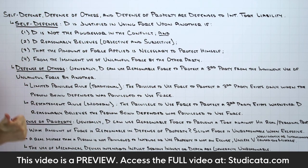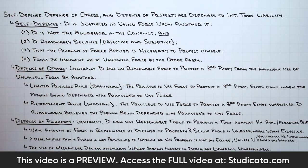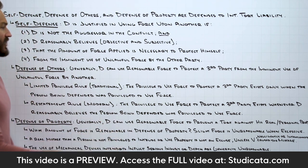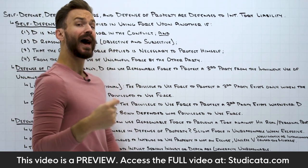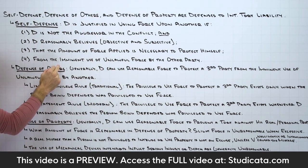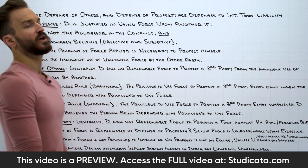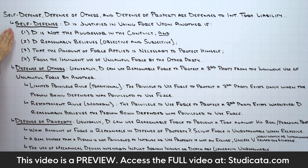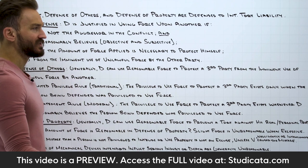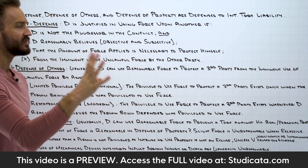Number one, the defendant is not the aggressor in the conflict. And two, three, and four, the defendant reasonably believes — both objectively and subjectively — that the amount of force applied is necessary to protect himself from the imminent use of unlawful force by the other party. To successfully assert self-defense as a defense to intentional tort liability, the defendant is going to have to show these four things.